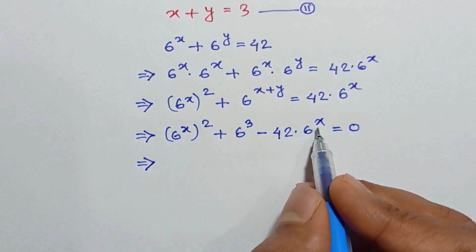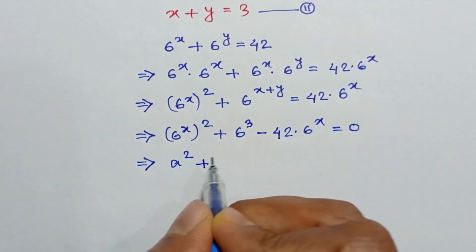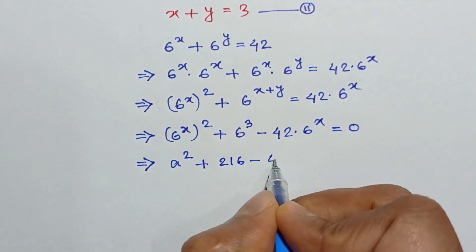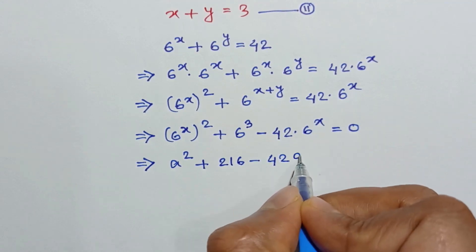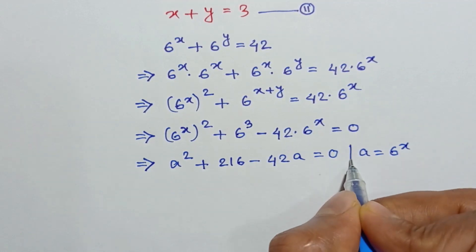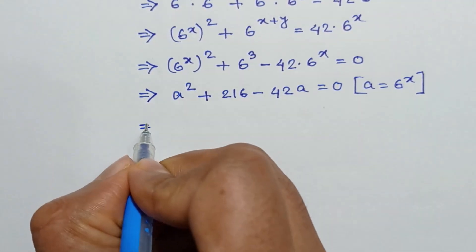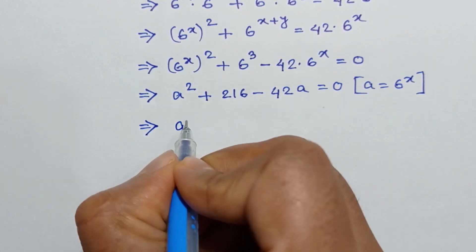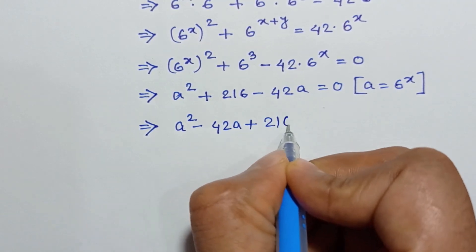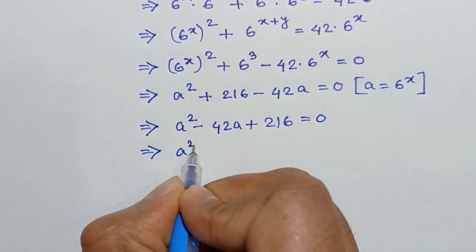Let's consider a is equal to 6 to the power x. Then rearranging, we can write a squared minus 42a plus 216 is equal to 0.